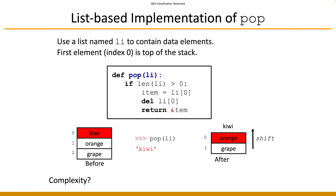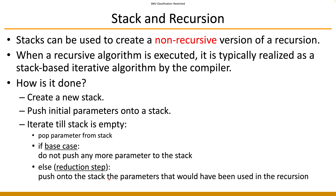Analyzing the complexity of pop: if you have N items and remove the first one, you must shift all remaining elements forward by one space. The more elements you have, the more shifting effort is required. Therefore the complexity of pop is also O(n) — linear in the number of elements. Stack is a very important and fundamental data structure, and one of its most important uses is to realize recursion.